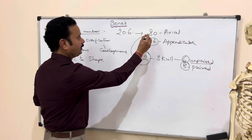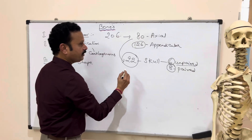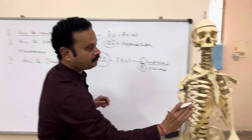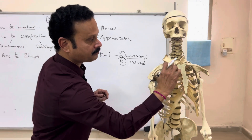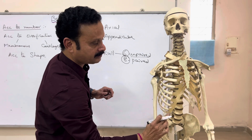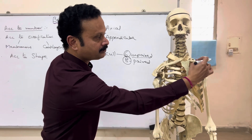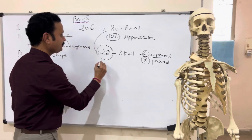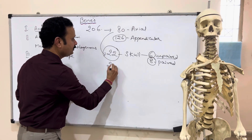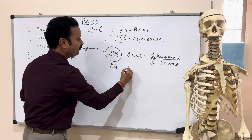Then we have 12 pairs of ribs — 12 on the right side and 12 on the left side — so there are 24 ribs in total.